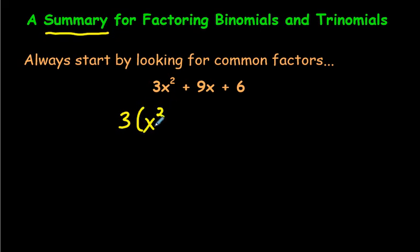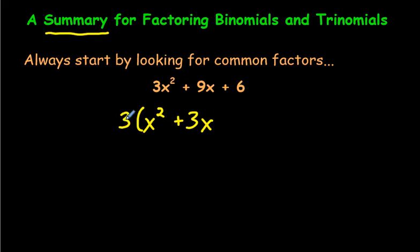3 times x squared gives us 3x squared, and 9 divided by 3 is 3 — don't forget the x. Let's verify: 3 times 3x gives us 9x, good. And the last one: 6 divided by 3 is 2. Be careful of the signs — sometimes they're negative.